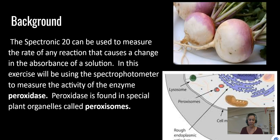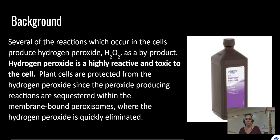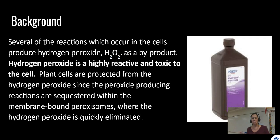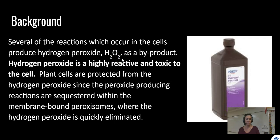One of those byproducts is peroxide — the same hydrogen peroxide you might put on a cut — which can be toxic to cells. The peroxisome contains the peroxidase enzyme needed to break down hydrogen peroxide. Hydrogen peroxide (H2O2) is our substrate — remember, substrate is the same as reactant when catalyzed by an enzyme. Many cellular reactions produce H2O2 as a byproduct, and because it's reactive and toxic, it must be eliminated quickly.